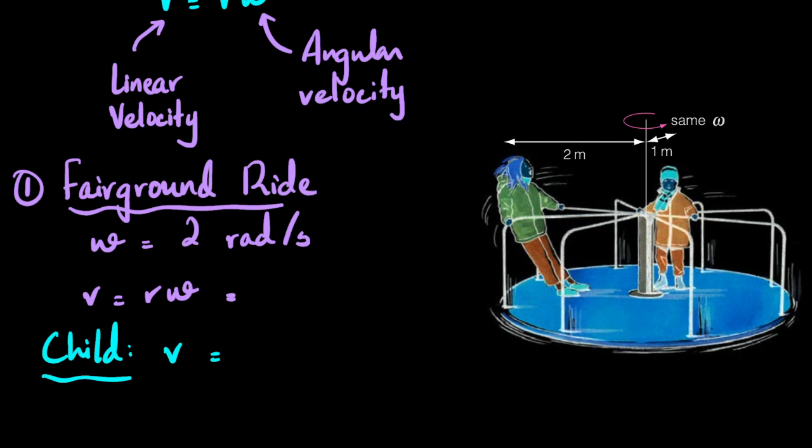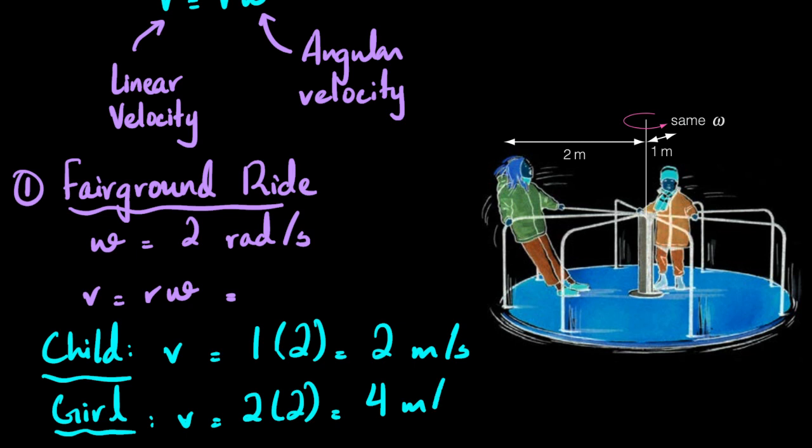If we say that omega is two and if we use this equation, then this would be the radius which is one for the child, and omega is the same two for both, so this turns out to be two meters per second. And if we try to find the velocity, the linear velocity of the girl, that would be again v equals r omega, but the girl is standing at a greater distance of two meters from the center, so that would be two times two, which would actually be four meters per second.